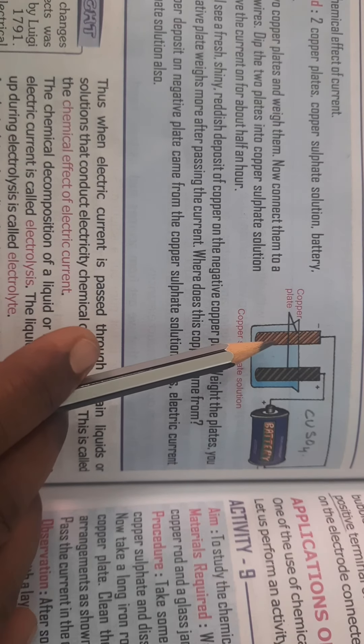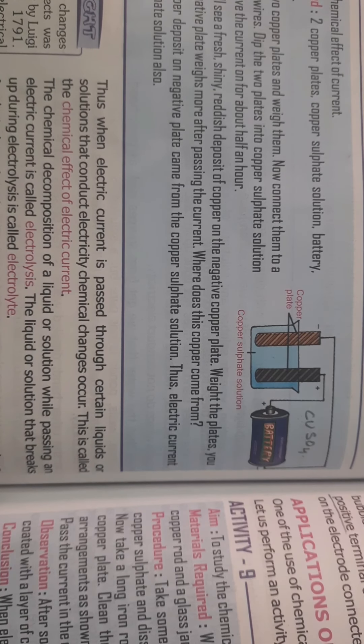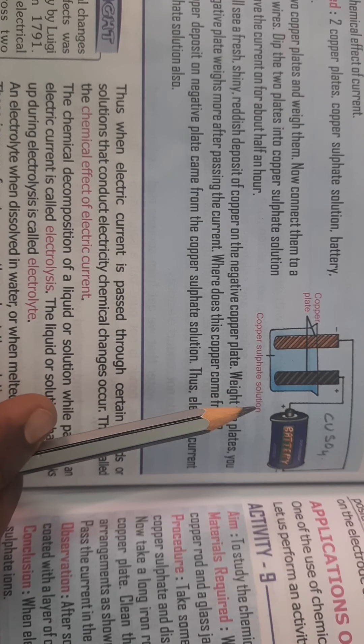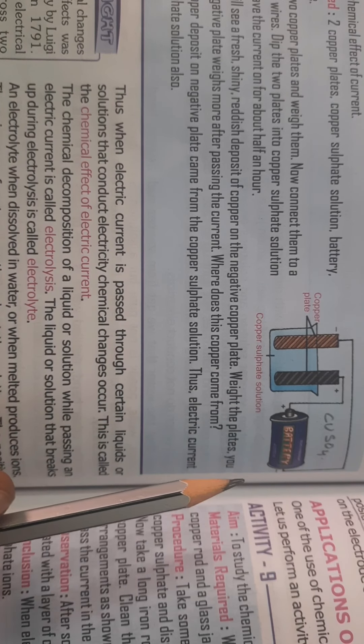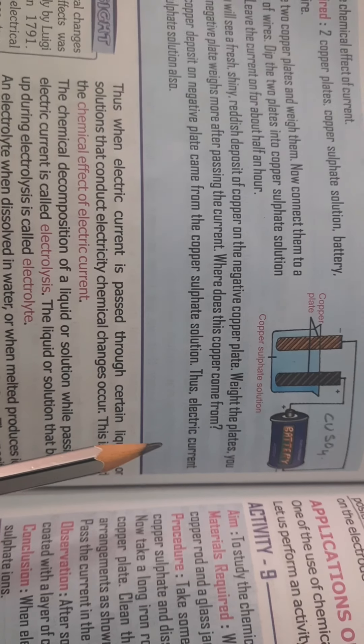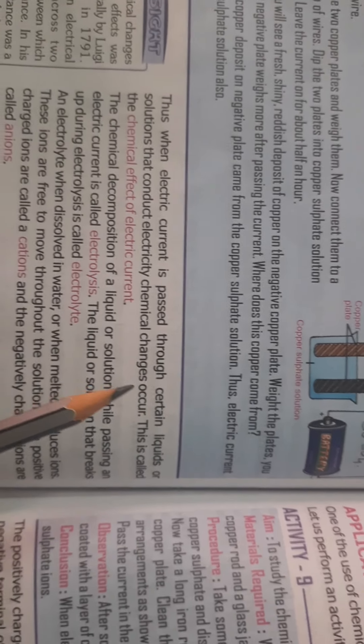Here the copper sulfate solution broke into copper and sulfate. The copper got deposited on the negative plate. So this is decomposition - the liquid or solution is breaking into its constituents on passing electric current. This is called electrolysis.